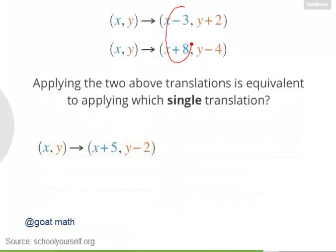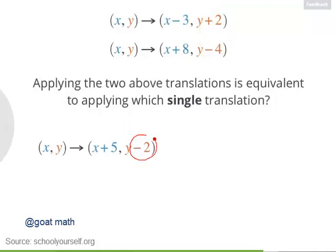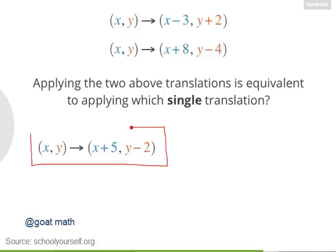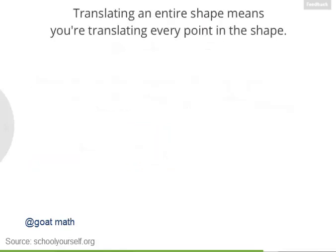Exactly. Subtracting three from the x-coordinate and then adding eight is the same as adding five. And adding two to the y-coordinate and then subtracting four is the same as subtracting two. So if you perform these two translations one after the other, that's the same as translating x, y to x plus five, y minus two.